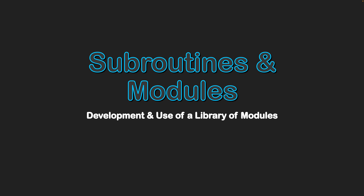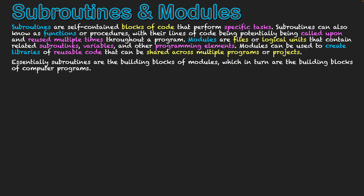Subroutines and modules. Subroutines are self-contained blocks of code that perform specific tasks. Subroutines can also be known as functions or procedures, with their lines of code potentially being called upon and reused multiple times throughout a program.